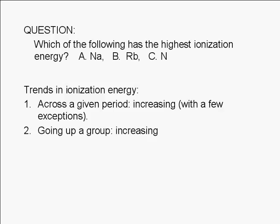So let's locate these elements in the periodic table. Sodium and rubidium are both in column 1, or group 1a. Sodium is in period 3, while rubidium is in period 5. Nitrogen is in period 2, column 15, or group 5a.